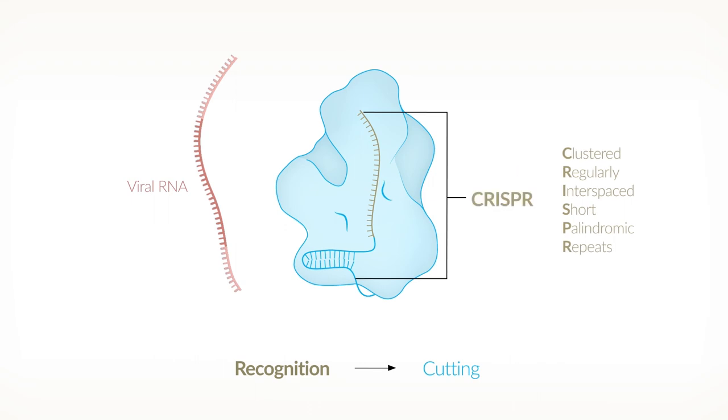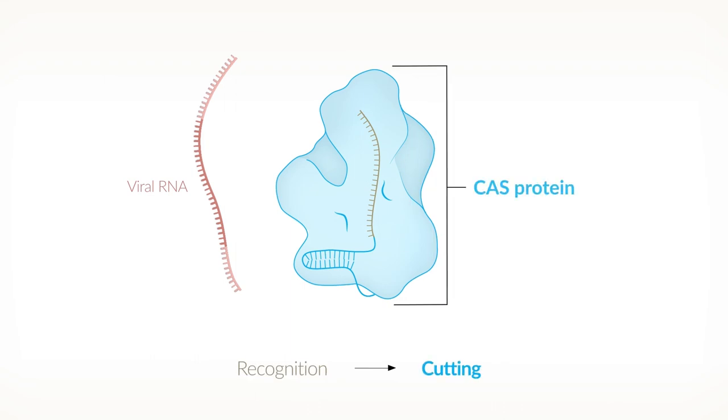The viral RNA strand is cut by the protein Cas. Cas is an abbreviation of CRISPR-associated protein. It belongs to the endonucleases, which are enzymes that cut strands of nucleotides.